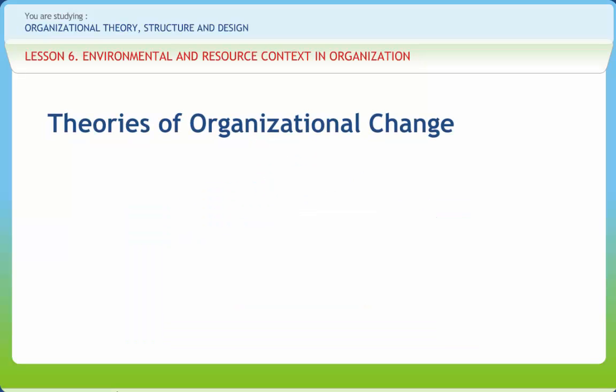Theories of organizational change. The first theory is resource dependence theory. Organizations are dependent on the environment for the resources they need to survive and grow. According to resource dependence theory, the goal of an organization is to minimize its dependence on other organizations for the supply of scarce resources. To manage their resource dependence and control their access to scarce resources, organizations develop various strategies.